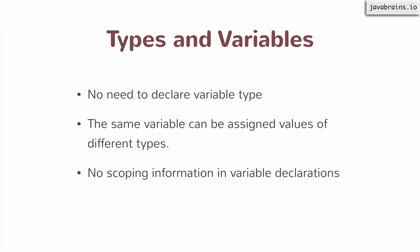There is no scoping information in variable declarations. What I mean by that is, if you compare it to things like Java, where you have private int or public int - they have scoping information which ties in with the class model of Java.